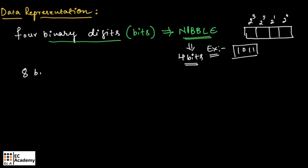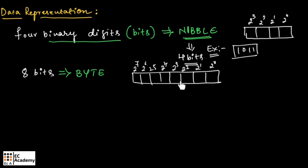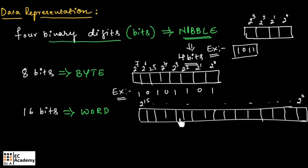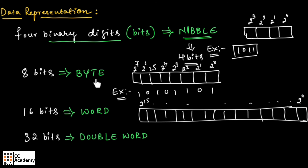If we take 8 bits, or 8 binary digits, we call that a byte. For example, 10101101 consists of 8 bits, so we call it a byte. If we take 16 bits, we call that a word. Similarly, if we take a 32-bit binary number, we call that a double word. So 4-bit is nibble, 8-bit is byte, 16-bit is word, and 32-bit is double word.